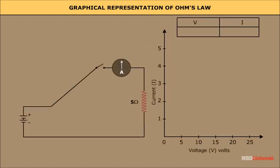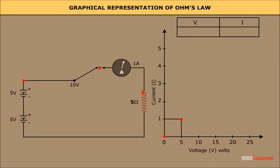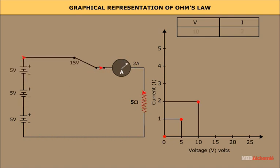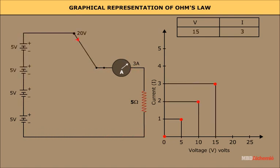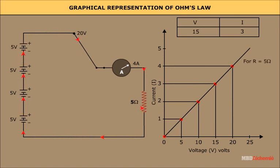Graphical representation of Ohm's Law. When the potential difference of 0 volts is applied, the ammeter reads 0 Amperes. When it is increased to 5 volts, the ammeter reads 1 Ampere, and so on. This is in accordance with Ohm's Law, which states that the current flowing through the circuit is directly proportional to the potential difference applied when the resistance is kept constant.